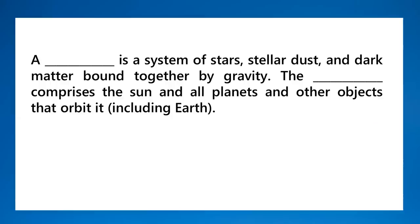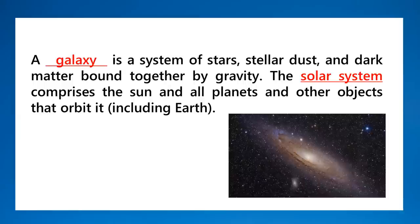A blank is a system of stars, stellar dust, and dark matter bound together by gravity — that is a galaxy. Our galaxy is the Milky Way, which is spiral-shaped. The blank that comprises the sun and all planets and other objects that orbit it, including Earth, is the solar system.